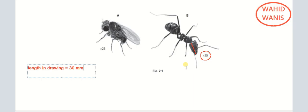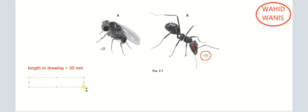To calculate the actual length, we use: actual equals drawing divided by magnification. The drawing length is 30 millimeters and the magnification is ×15, so the actual length equals 30 divided by 15, which gives an actual length of 2 millimeters. This is the actual size of the specimen.